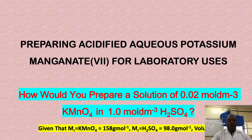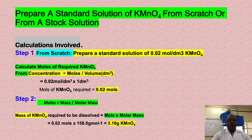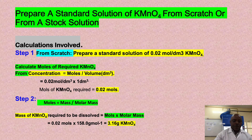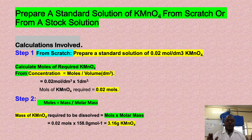This leads us to Step 1 in preparing the potassium manganate solution. You can prepare potassium manganate solution from scratch or from a stock solution. If you are using it from scratch, there are certain basic calculations you have to do. Since we have been provided with the data, for example, a standard solution of 0.02 mol per dm³ potassium manganate VII, the first thing is we need to calculate the number of moles of potassium manganate that is required.